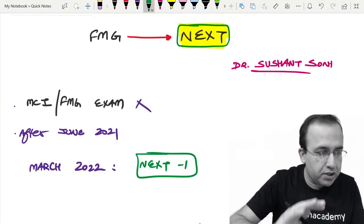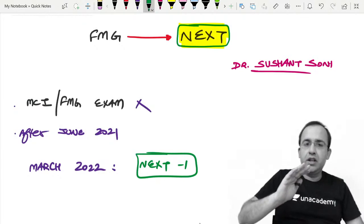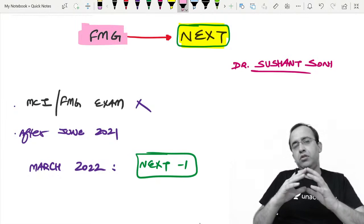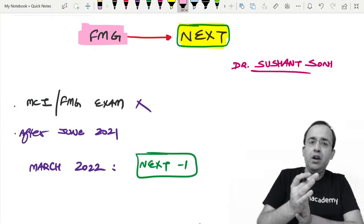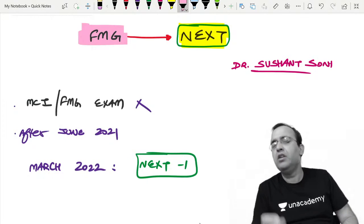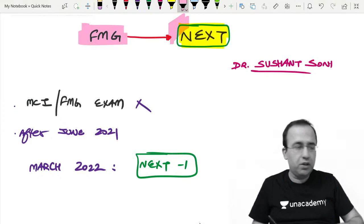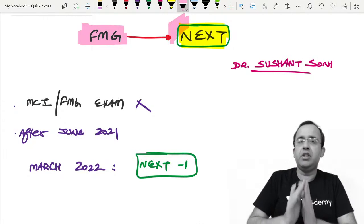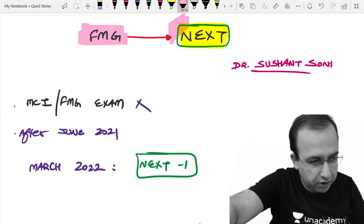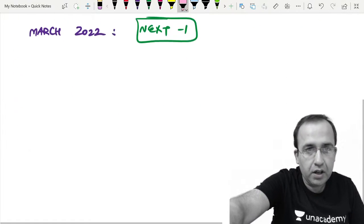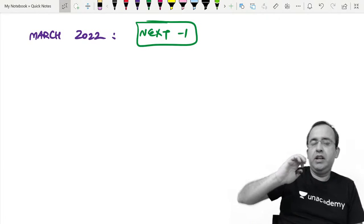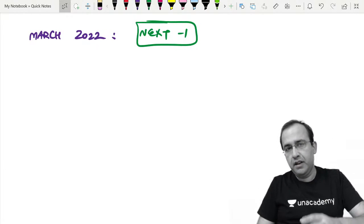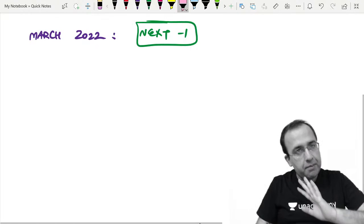December 2021 will not happen. March 2022 will be the NEXT one exam. This is a session exclusively for students who are right now doing MBBS abroad and will be preparing for the NEXT pattern. This is a scheduling session - how should they go forward about it and how should they prepare for NEXT.